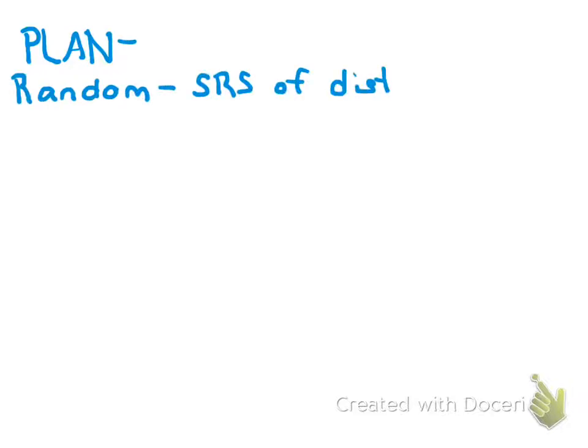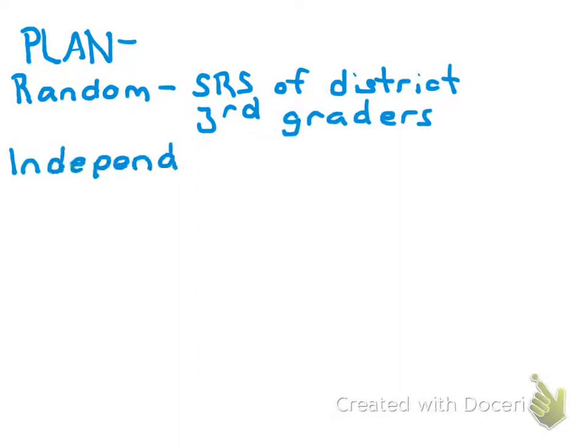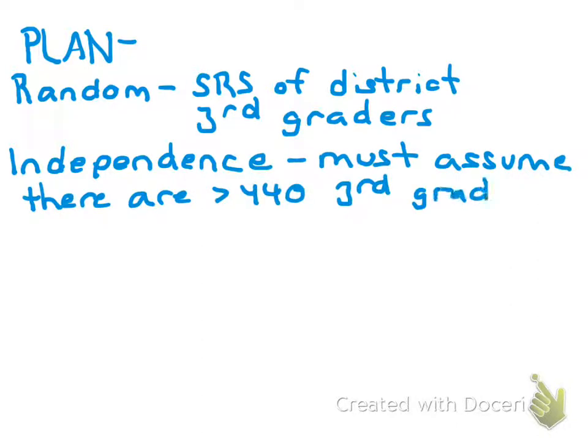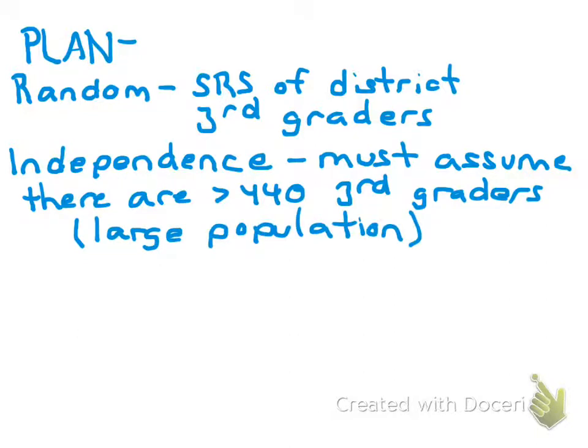The Plan step looks similar to what we did with confidence intervals: we need randomness, normality, and independence. For randomness, we're told we have an SRS of the district's third grade students. For independence, I'm going to assume there are at least 440 third graders — that's 10 times 44 — in this district's schools. Since I have a large population, I can assume students were chosen without replacement and are thus independent observations.